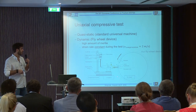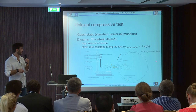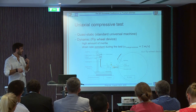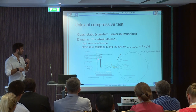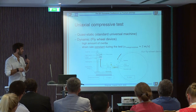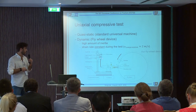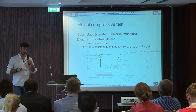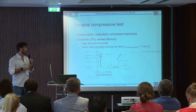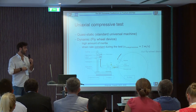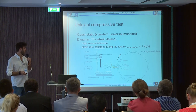Very briefly, the way it works consists of putting high inertial energy thanks to a heavy wheel; then this hammer will impact the anvil, and then the compression loading is transmitted, thanks to a buckling bar, to the specimen. The main advantage of this test is that during the compression, the strain rate is constant. The velocity during the compression is exactly two meters per second during the compressive test.